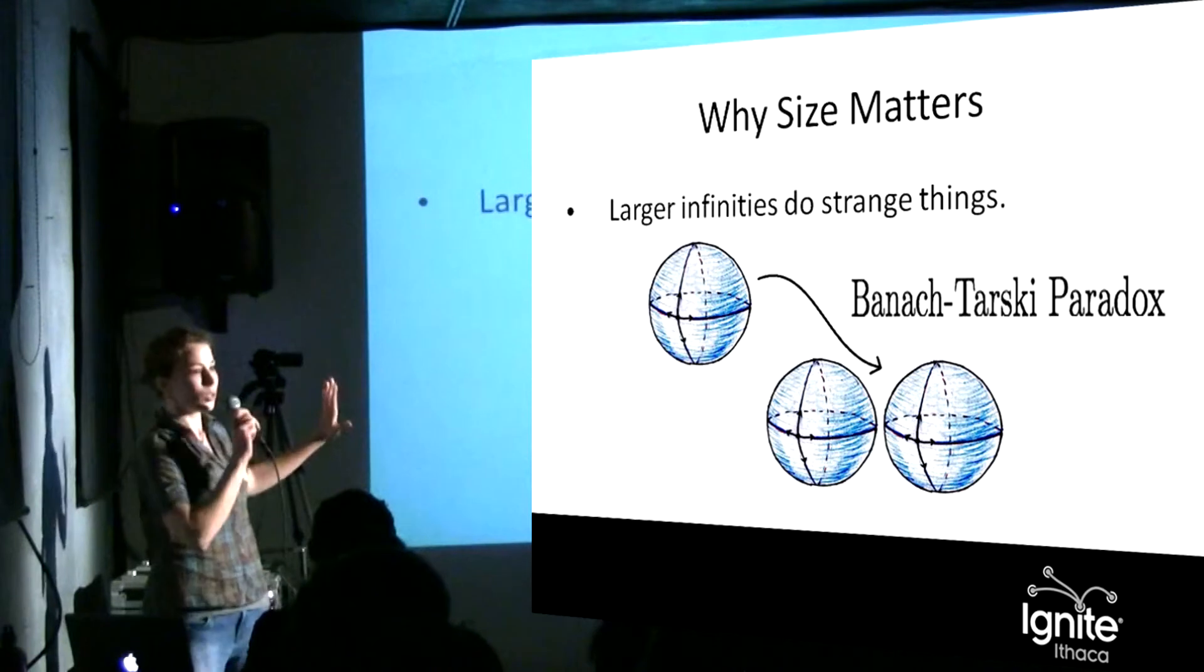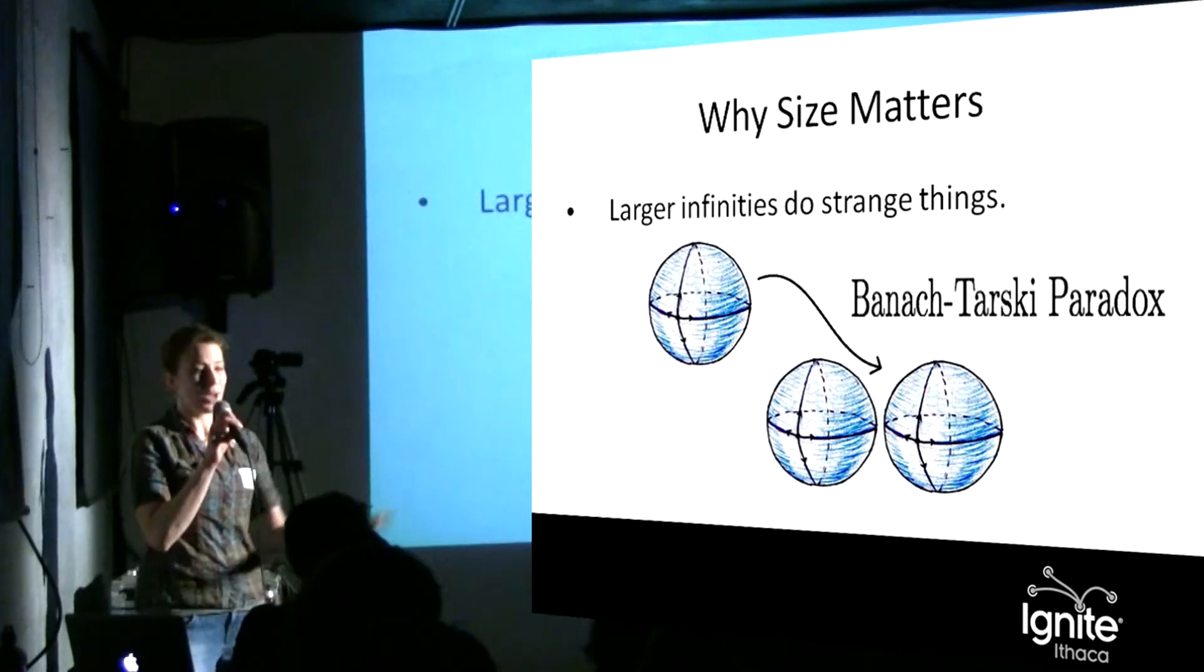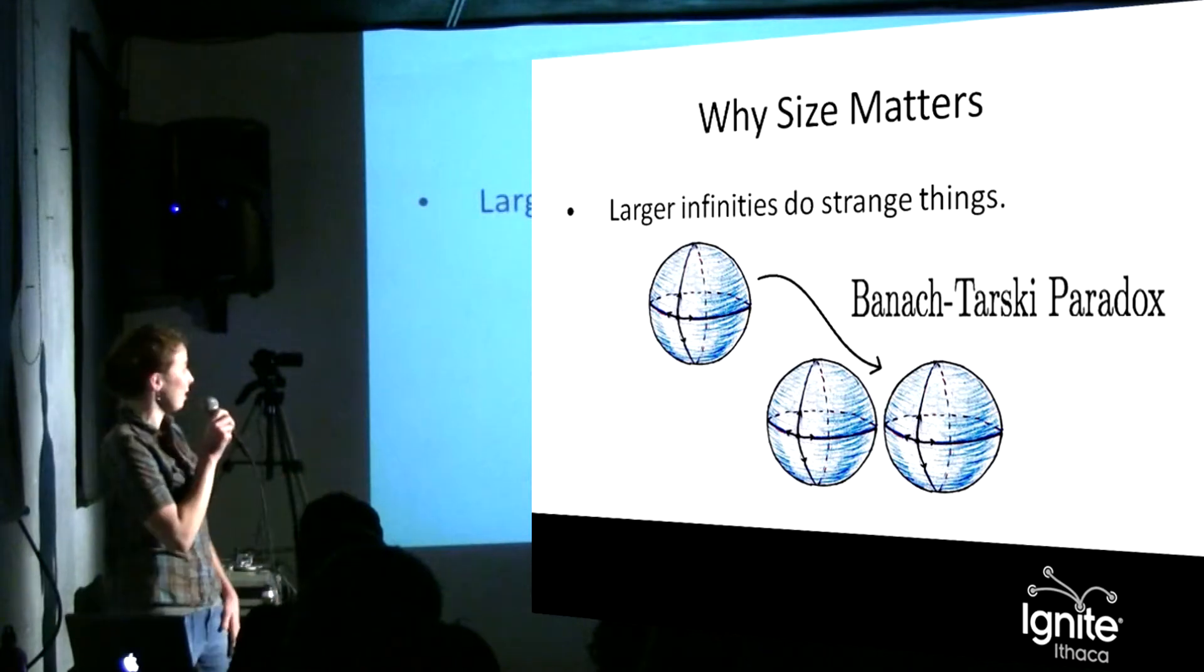For example, this picture here is one of the big paradoxes that comes from treating large infinities the same size as though they were the same size as smaller infinities.